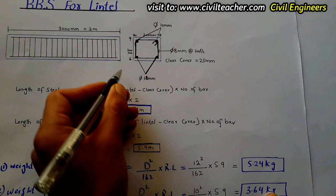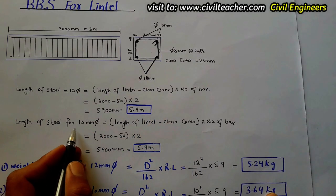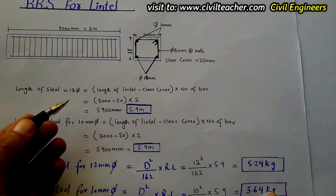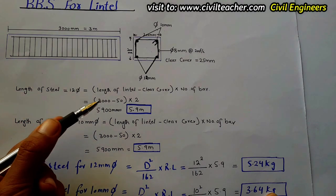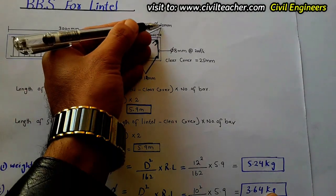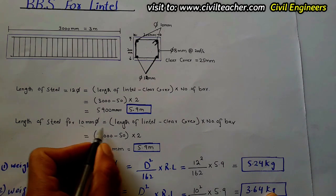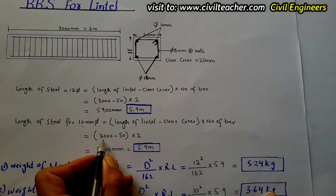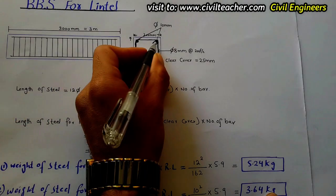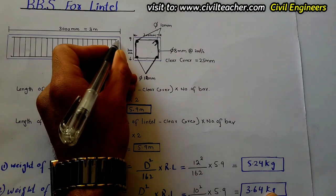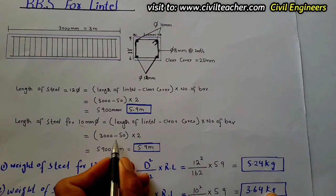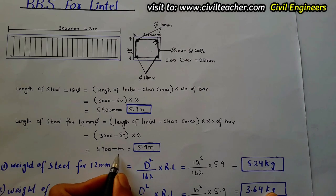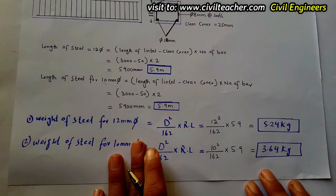Now the length of steel for the 10 mm diameter top bars. We have two numbers of these bars. The same formula applies: length of lintel minus clear cover, multiplied by number of bars. So: 3000 − 50 (25 mm each side) × 2 = 5900 mm, which is equal to 5.9 meters.